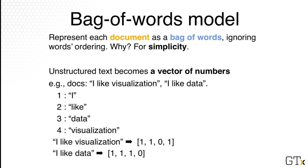There is a problem with this simple bag of words model, however. It's that we assign the same weight — which is 1 — to every single word. That means as soon as we see a word, we give it a 1. You can imagine the problem: now we consider all words as equally important. But in practice, some words might be more important, more meaningful, more characteristic of the document. So how do we express that importance?